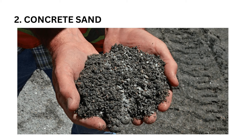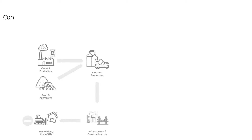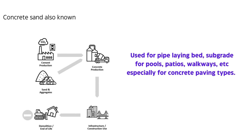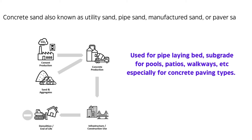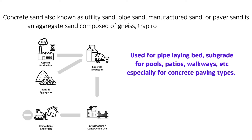2. Concrete Sand. Concrete sand, also known as utility sand, pipe sand, manufactured sand, or paver sand, is an aggregate sand composed of gneiss, trap rock, limestone, or granite. The materials are crushed in a quarry, washed, and screened for higher quality to avoid large aggregate particles and maintain a fine aggregate size range. It is used for pipe-laying beds, subgrade for pools, patios, walkways, and especially for concrete paving types.